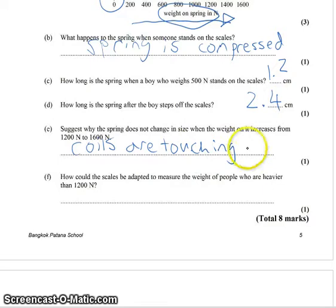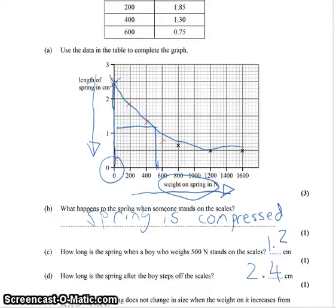How could the scales be adapted to measure the weight of people who are heavier than 1,200 Newtons? So if you see on our graph, it's clear that once you get past 1,200, our graph is pretty much flat. Now, how could we change that? Well, we could use a stiffer spring or we could use more than one spring, but we have to be careful about how we arrange them.